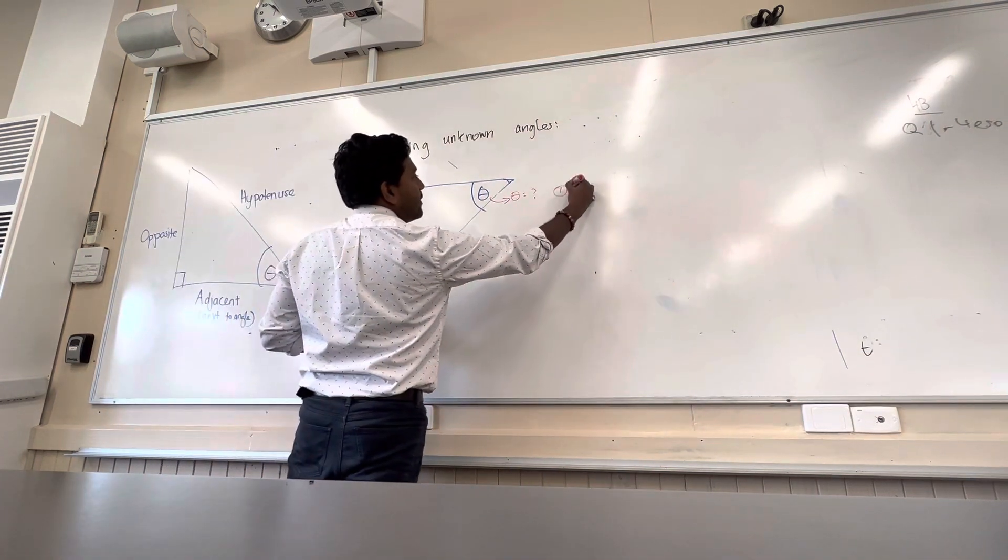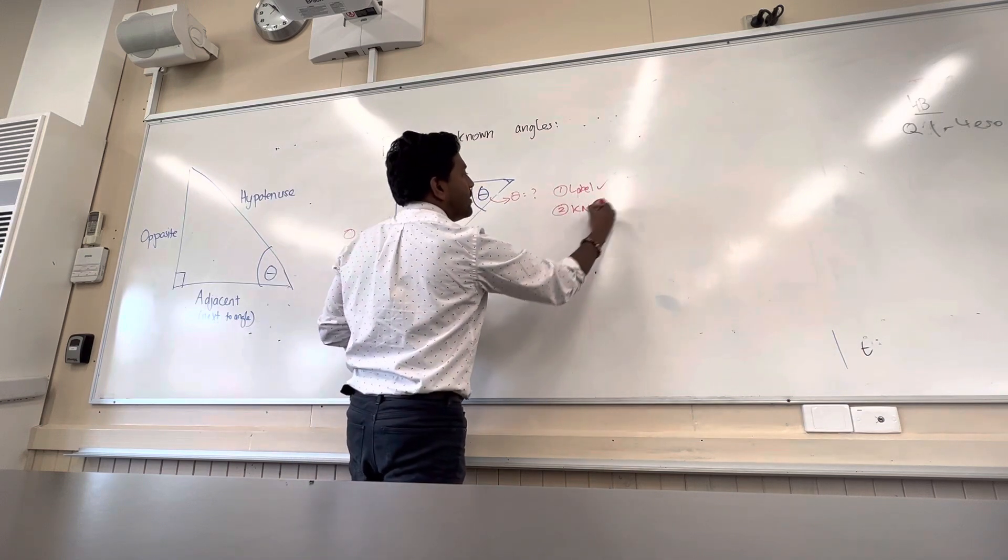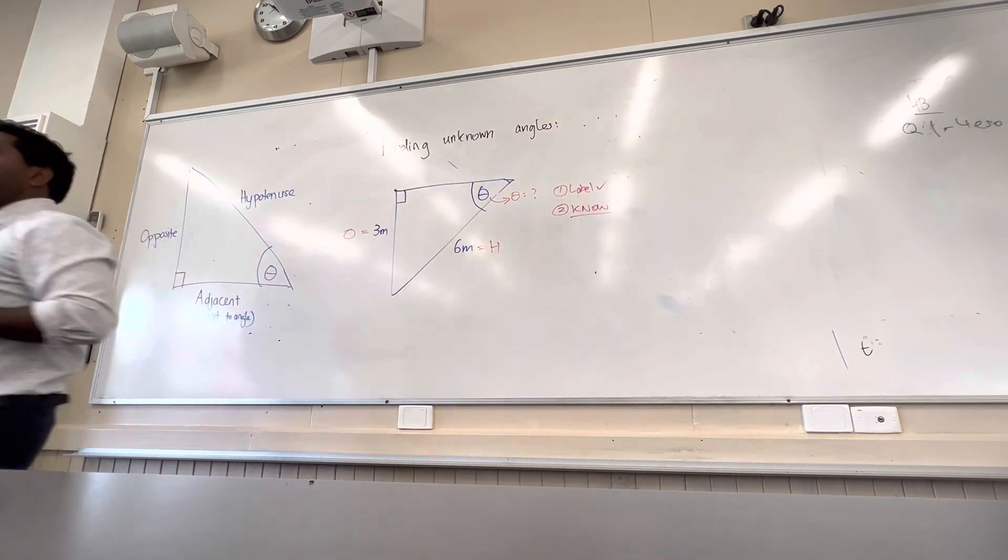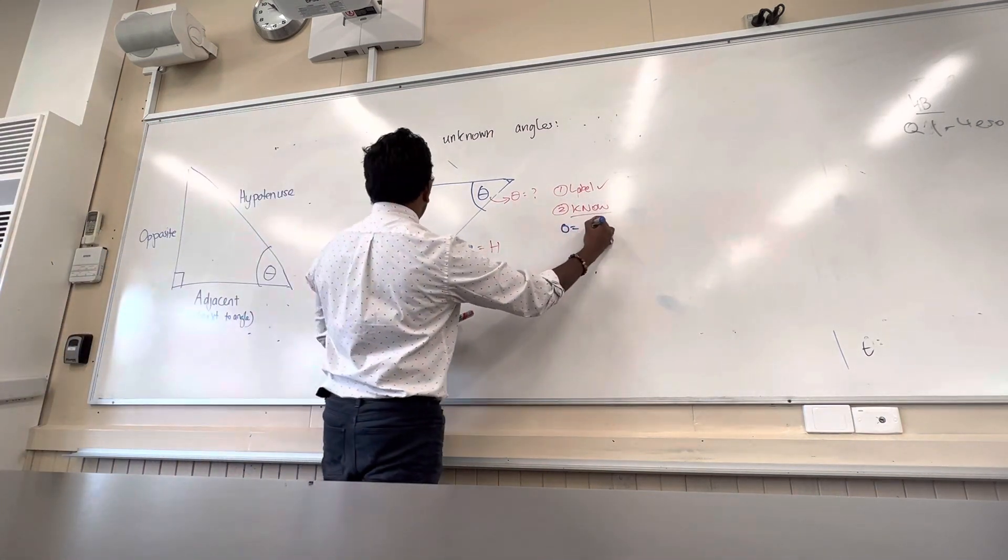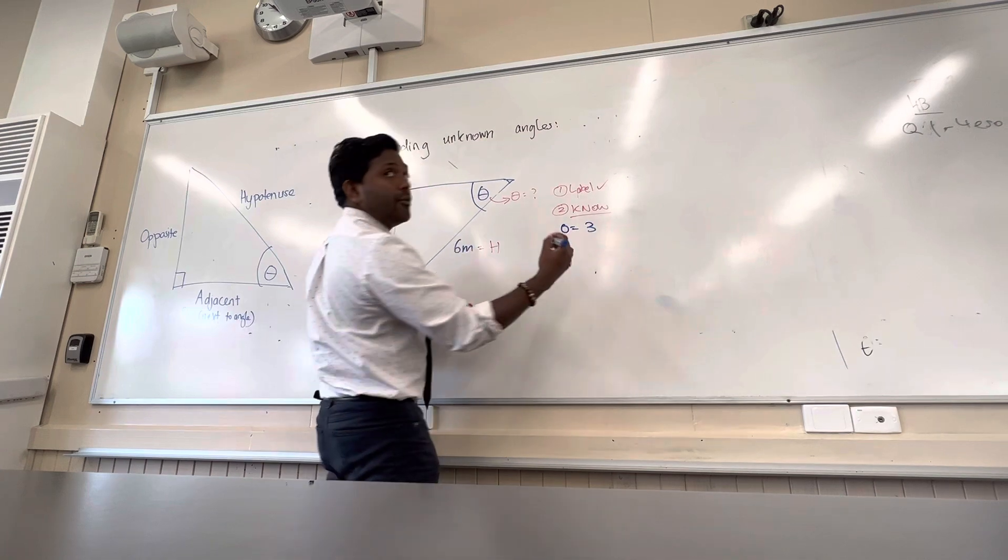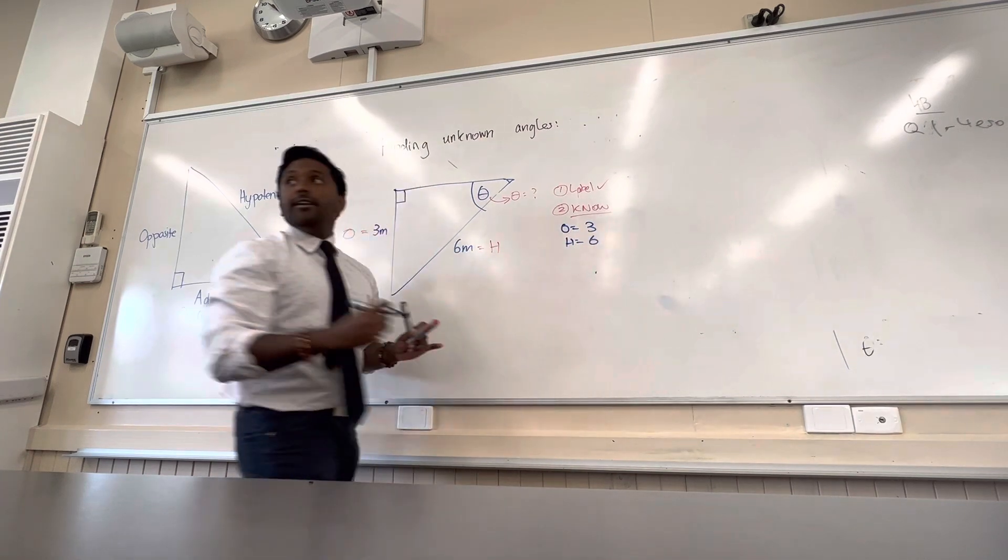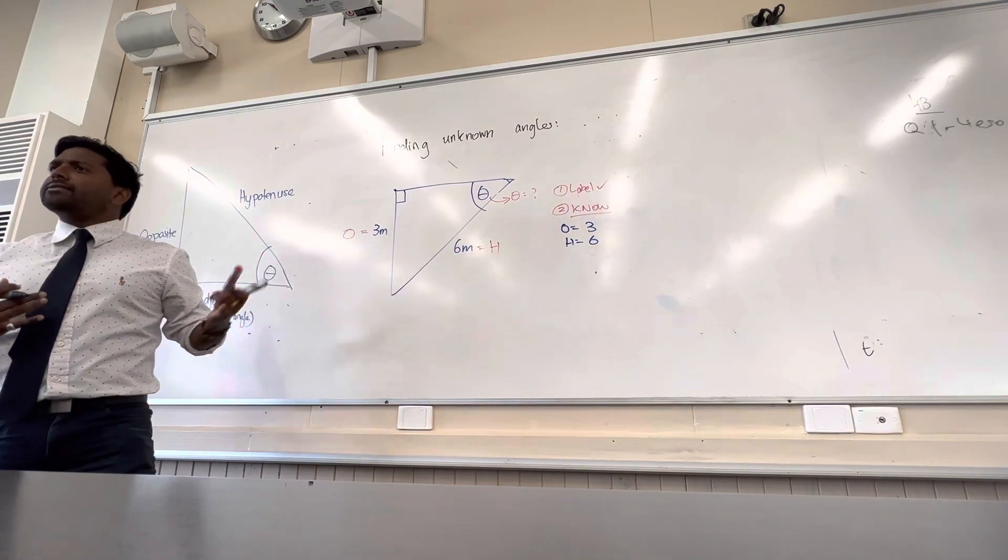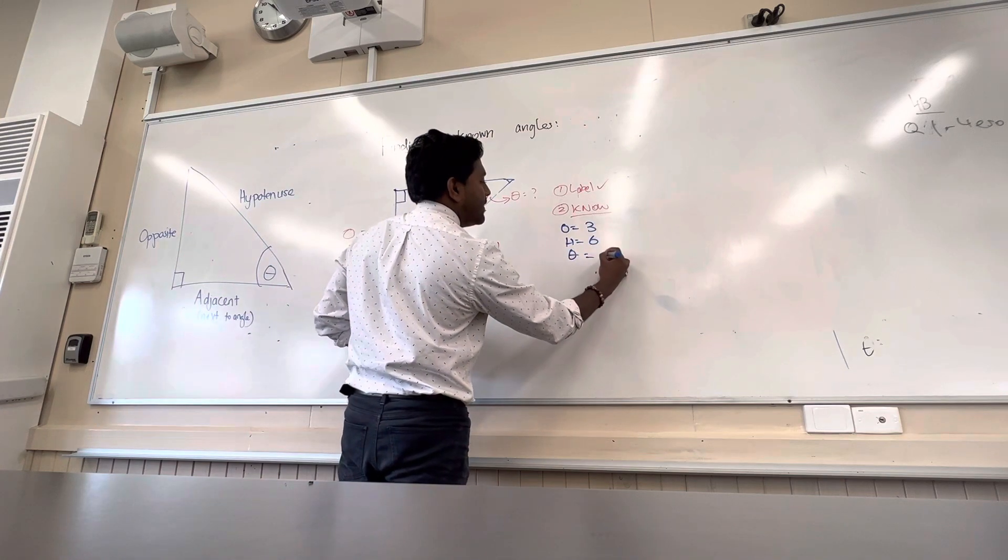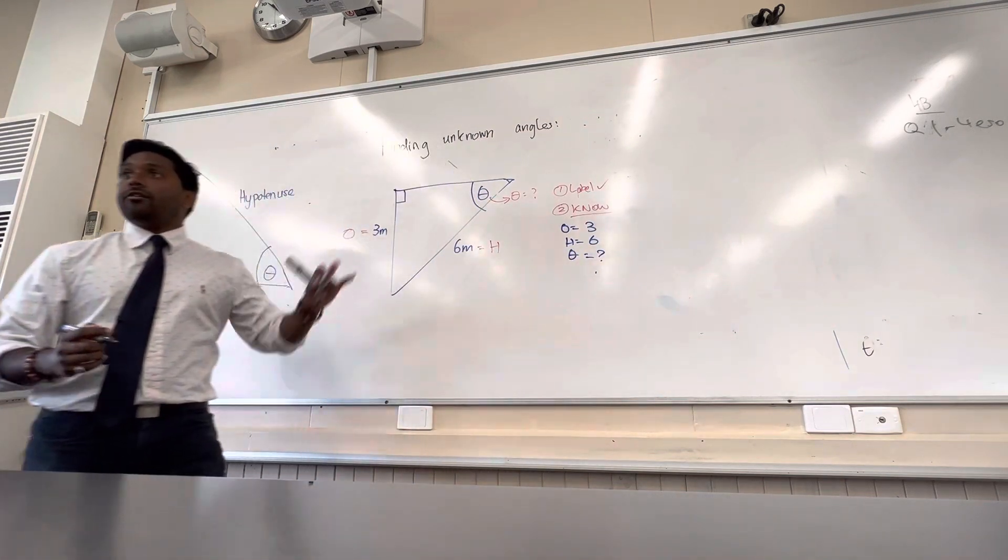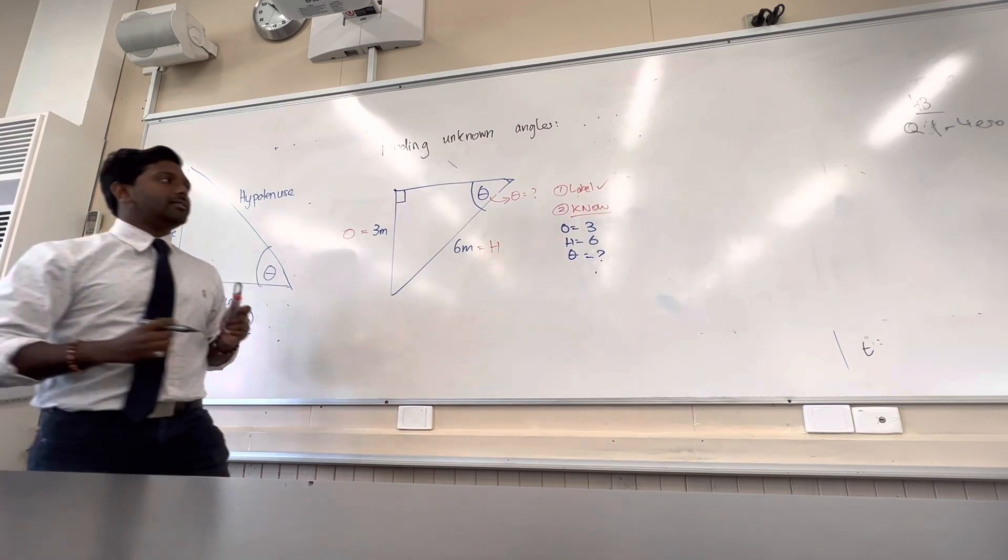Okay cool. So after labeling, we've done that. Now the second step is writing down what you know. So what do we know from this triangle, Harper? O is equal to three. What else do we know? H equals six. Okay, slowly so you become familiar with this O and H. What else do we know? Theta? No, we don't. When we put that question mark, we're actually telling our brain we need to figure out what this is.